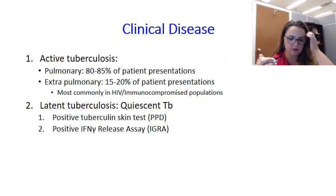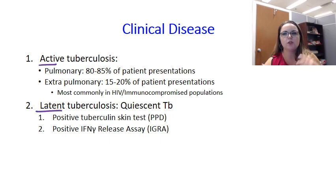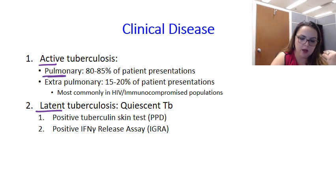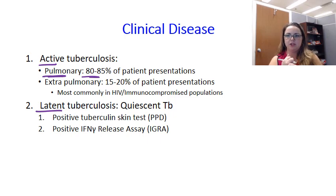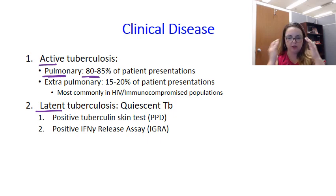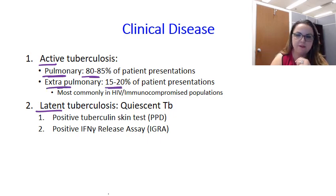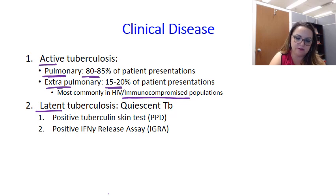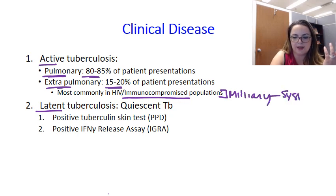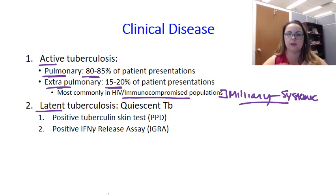There are two forms of disease: active tuberculosis and latent tuberculosis. Active pulmonary TB accounts for about 80 to 85% of patients — that's where you're worried about somebody coughing tuberculosis onto you. Extrapulmonary only happens in about 15 to 20% of patients. In immunocompromised patients, like the HIV population, you need to worry about miliary TB, where it's disseminated and systemic — a very severe case.